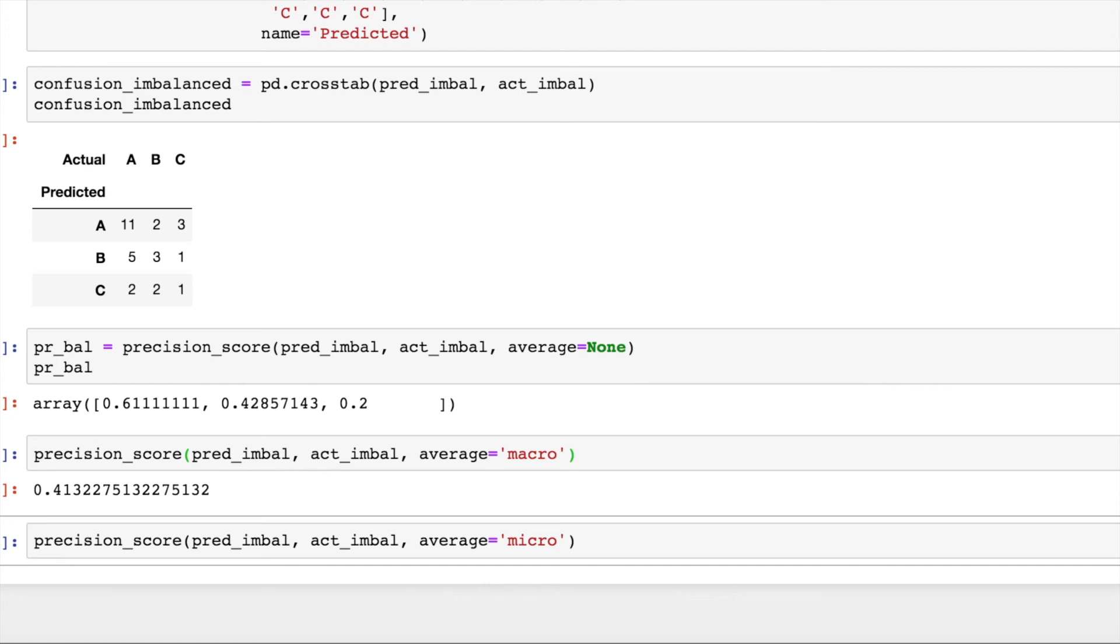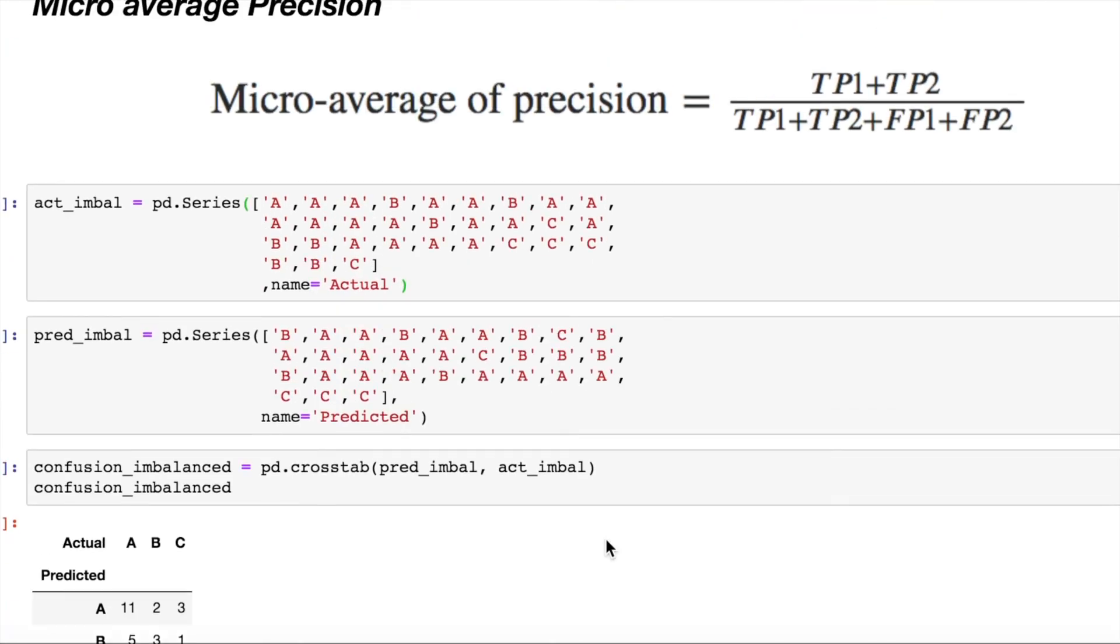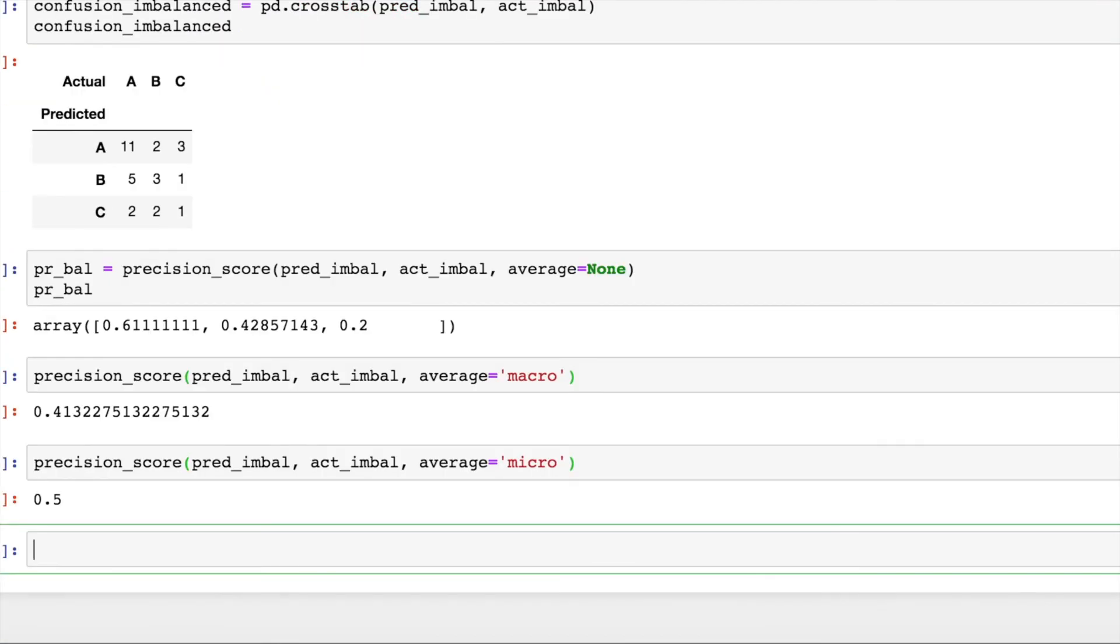Micro on the other hand, what it would do is, it would calculate true positives per class and calculate the ratio as you have seen above and come up with a value 0.5. So, now what micro tells you is, micro gives you a holistic view about how your overall classifier is working even in the case of class imbalance.